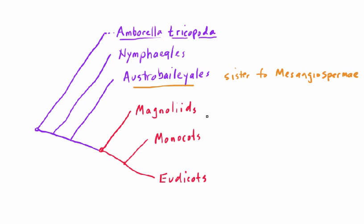The members of this group are more closely related to roses and palm trees than to the water lilies. You would have to go back further into the past to get to the common ancestor shared by the Austrobaileyales and the Nymphaeales. So the closest relative to the mesangiosperms that's not a mesangiosperm itself would be the sister taxon — the Austrobaileyales.